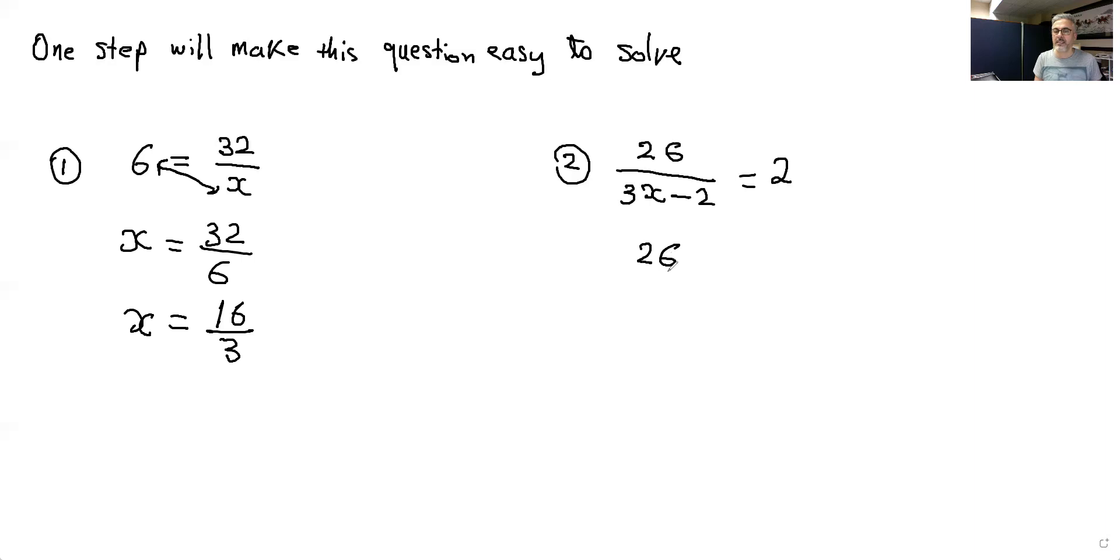So therefore you'll end up with 26 over 2 equals 3x minus 2. Now 26 divided by 2 is 13 equals 3x minus 2.